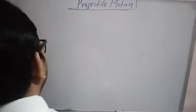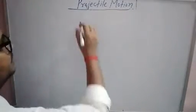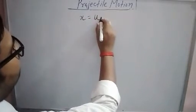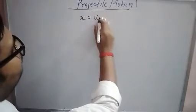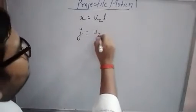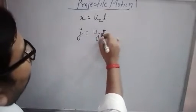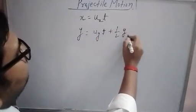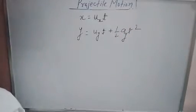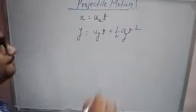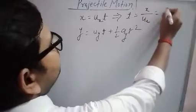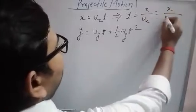A student has asked us to write the equation of trajectory. For the equation of trajectory, along the x-axis we write x = u_x · t, so t = x / u_x = x / (u cos theta). This expression for t can be substituted into the y-axis equation to eliminate t and obtain y as a function of x, giving the trajectory equation.